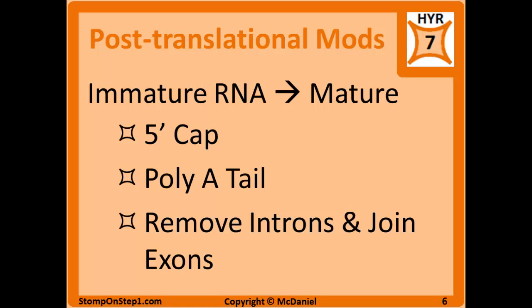The spliceosome is going to remove introns and join the remaining exons. This splicing process can be carried out in multiple different ways, so you can reorganize the order of exons, keep some introns, get rid of some exons in a whole bunch of different fashions, which can give you multiple different gene products from a single gene.